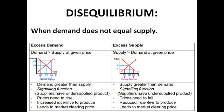Disequilibrium within the market occurs when demand does not equal supply, so there's either excess demand or excess supply. When there's excess demand, it means that there's more demand than supply at the given price. As you can see on the diagram, when the price is at P1, the quantity supplied is only Qs whilst the quantity demanded is Qd, and because Qd is greater than Qs, there is excess demand.